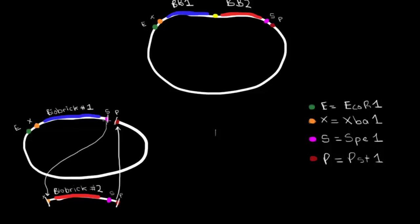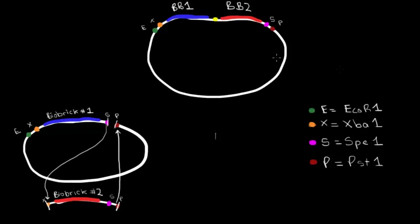Next, we have that new hybrid sequence between the SPE1 and the XBA1, which I've denoted as yellow, like I said before. And then we have Biobrick 2. Then we have the S site, this S site, which went unchanged. And then we have the P site here, which reformed with itself. And now we have that P site.